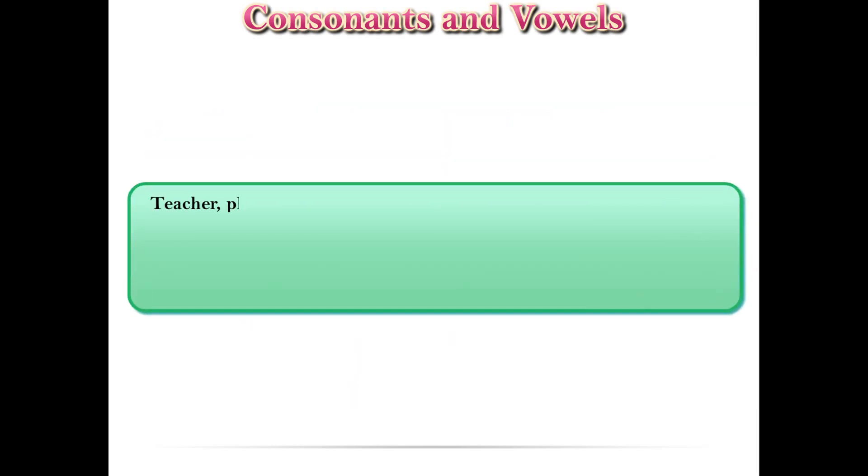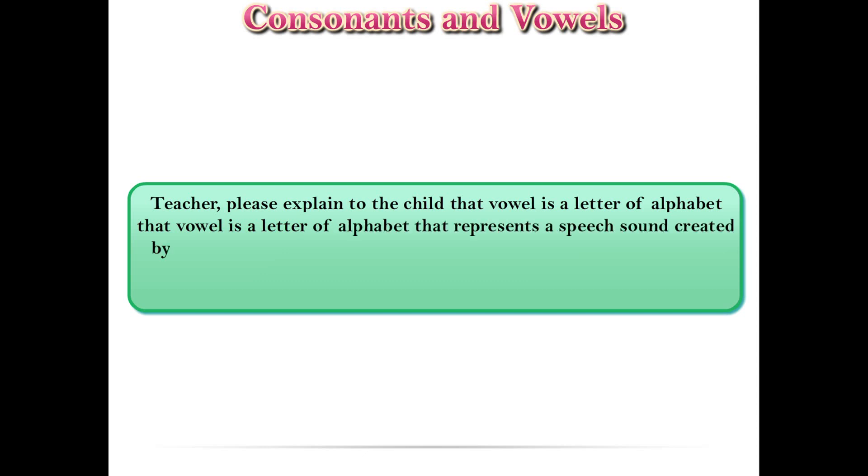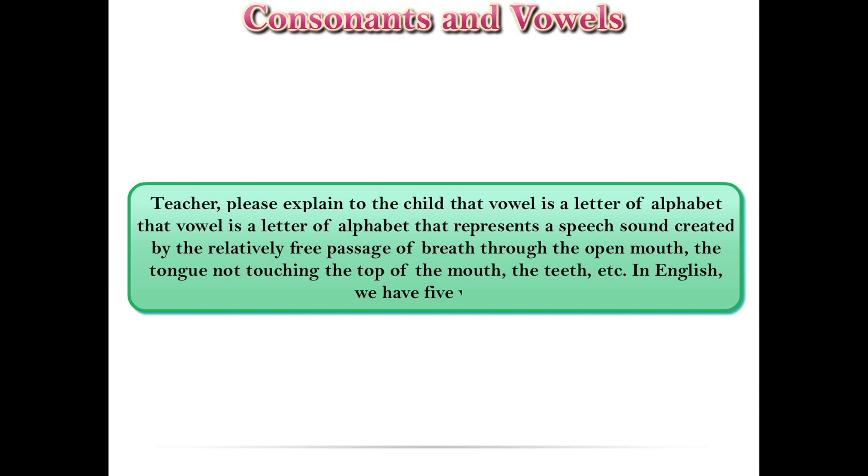Teacher, please explain to the child that a vowel is a letter of the alphabet that represents a speech sound created by the relatively free passage of breath through the open mouth, the tongue not touching the top of the mouth, the teeth, etc. In English, we have five vowels.